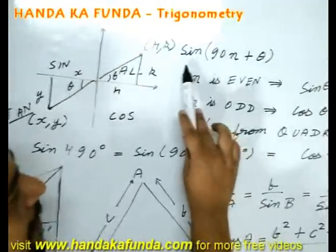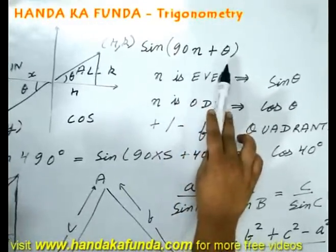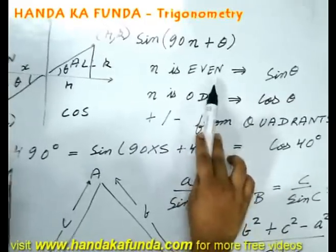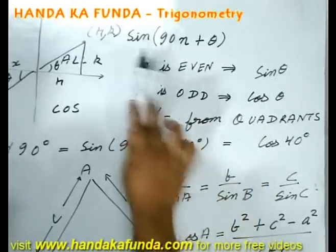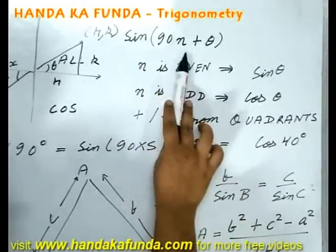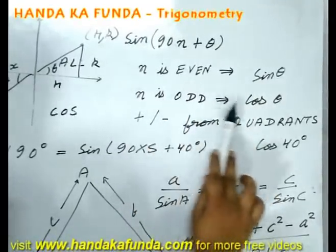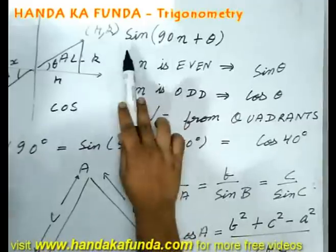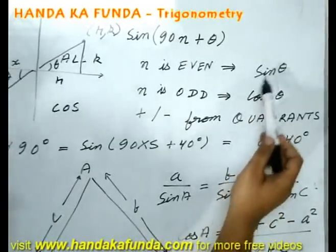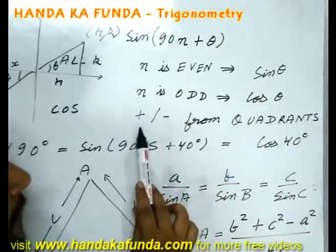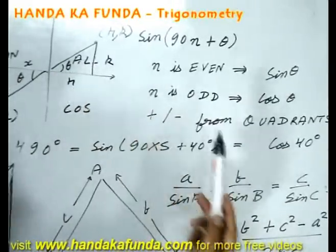Say I am given a huge angle which can be represented as sin of 90n plus theta. Then if n is even then it will remain sin theta. If n is odd then it will change to cos theta. If however I had cos of some angle then cos would have behaved the same way. It would have remained cos theta or it would have changed to sin theta. Tan would have either remained the same or it would have changed to cot theta. But this just gives me the values. The positive sign or the negative sign of the final answer depends on which quadrant my angle lies in.